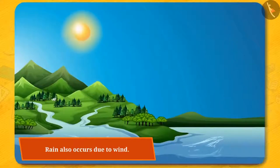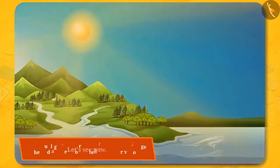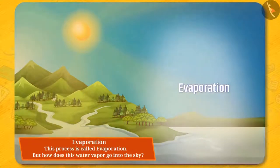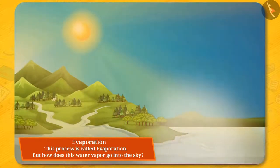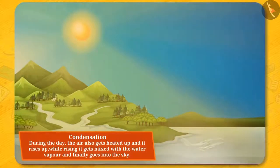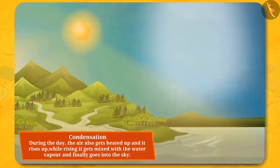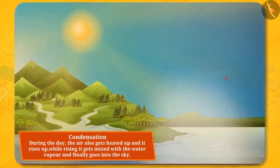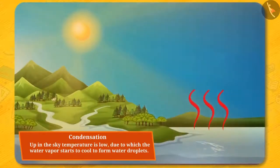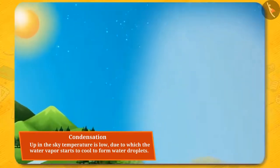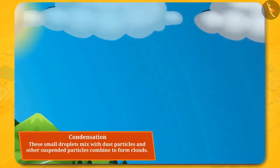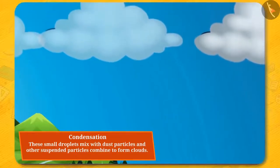Do you know rain also occurs due to wind? Due to sunlight, the surface of water bodies gets heated and gets converted into water vapour. This process is called evaporation. Due to sunlight, during the day the air also gets heated up and rises up. While rising, it gets mixed with the water vapour and finally goes into the sky. Up in the sky, temperature is low, due to which water vapour starts to cool to form water droplets. These small droplets mixed with dust particles and other suspended particles combine to form clouds. This process is called condensation.